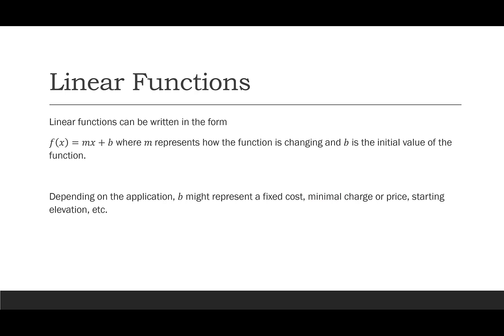A linear function can be written in the form f(x) = mx + b. So m here is going to represent how the function is changing. So it could be positive, it could be negative. b is going to be like the initial value of the function and b really changes based on the application. So b might represent a fixed cost, it could be a minimal charge or a price, it could be a starting elevation. There are a lot of different things that b could represent.